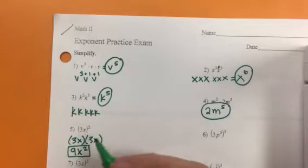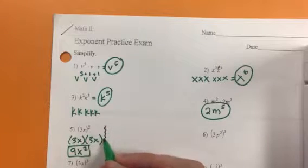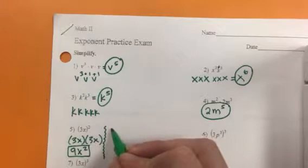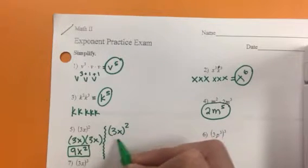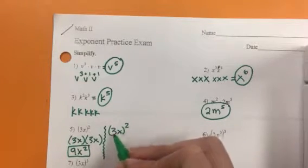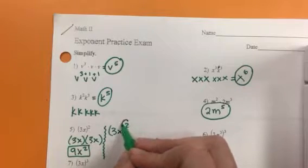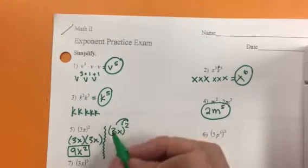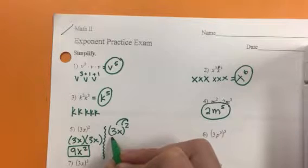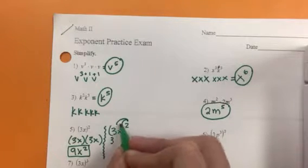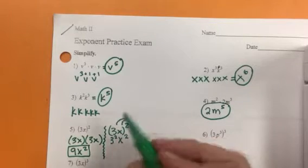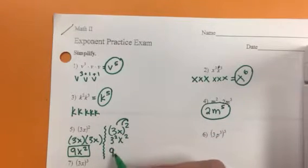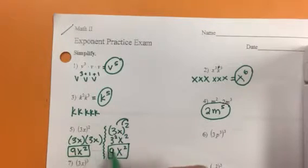If you wanted to do it a different way, we could say 3x with the power of two. Because there's no addition or subtraction signs in here, we can have the power go to both of our pieces. So the coefficient would be 3 squared. X would also be squared. 3 squared equals 9. X squared stays the same. Both of those ways work.